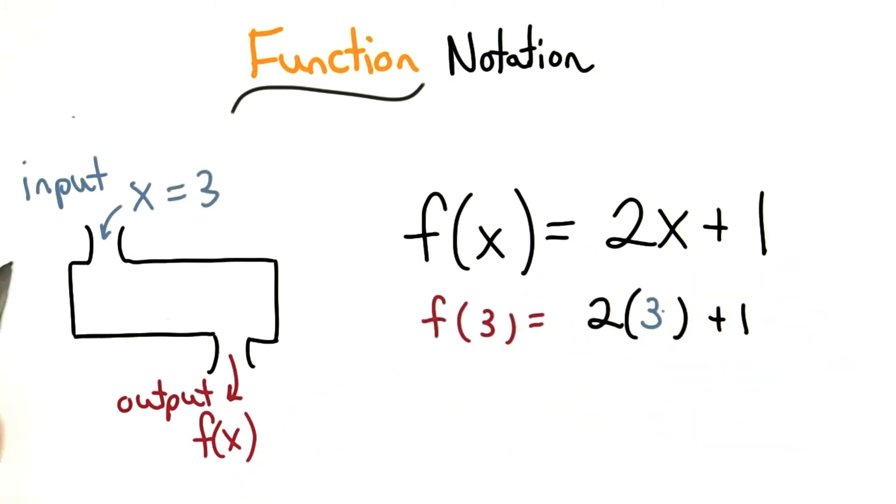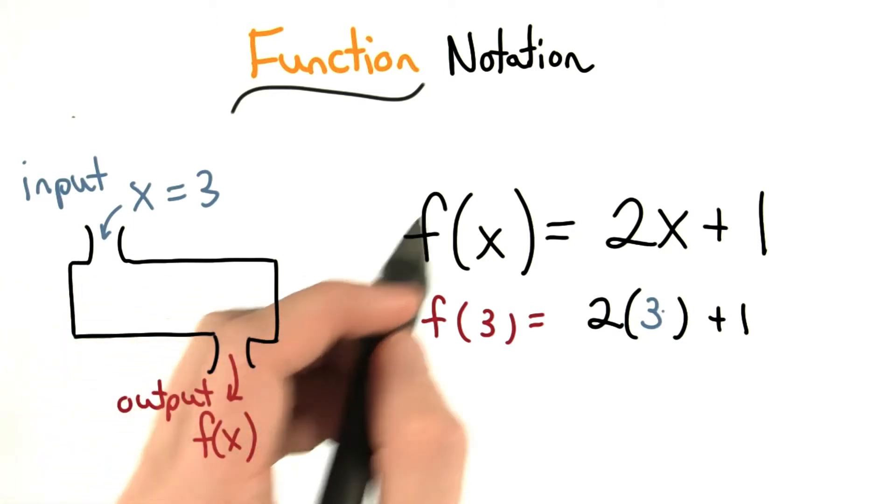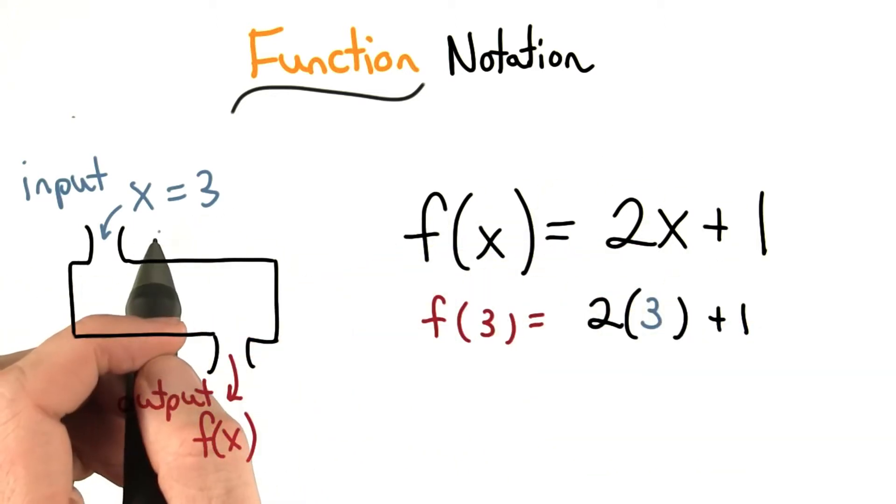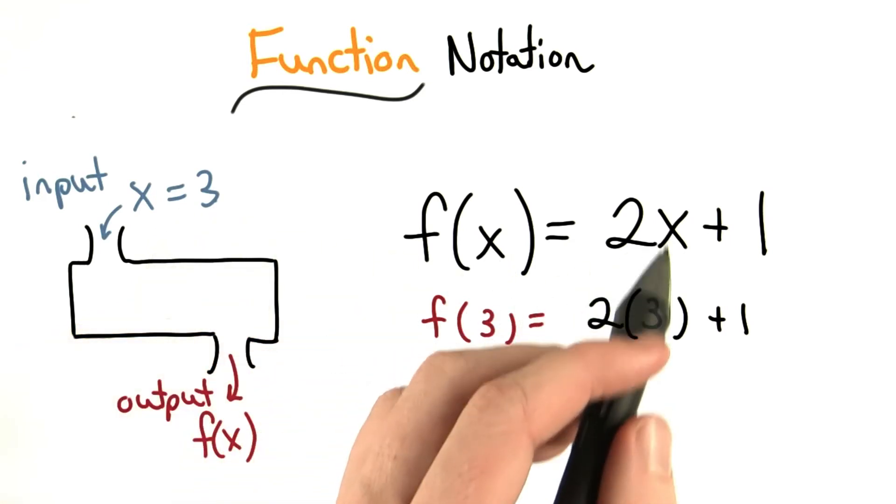To find the value or output of a function, we use substitution. For example, we could evaluate this function for x equals 3. My input is 3, so I plug it in.